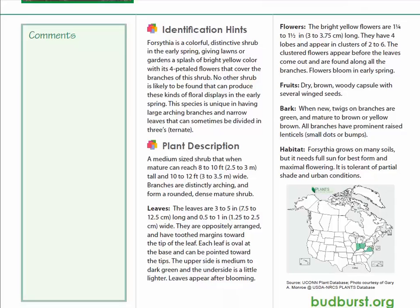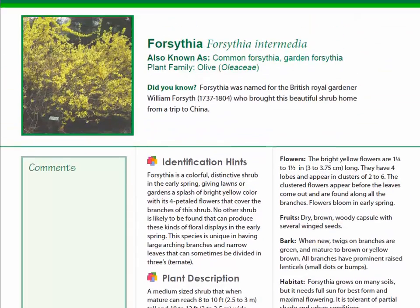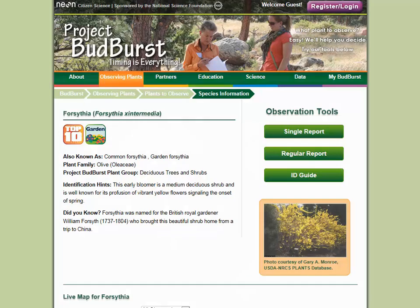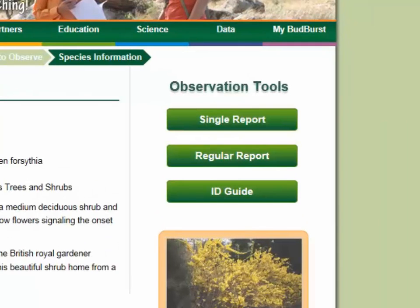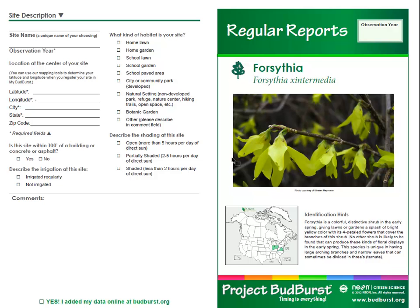Let's return to the resource page for forsythia and look at the report forms. Regular report and single report forms are used for different types of plant observing. Let's look at regular reports first. Regular reports are used for event-based monitoring. With regular reports, you watch for the first date each phase occurs for your plant throughout the seasons. Let's take a closer look at the regular report form.